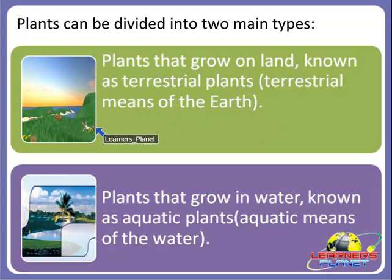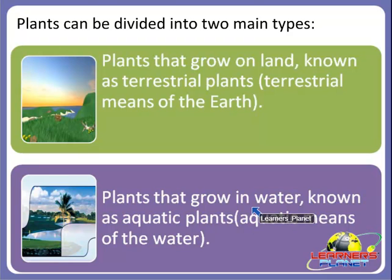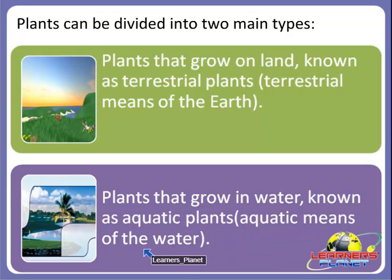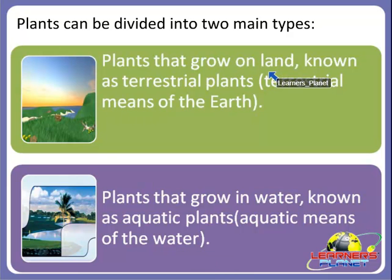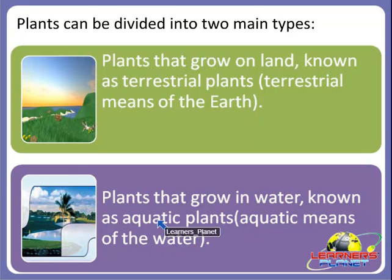You can see in the picture. The second main type is the plants that grow in water, which are known as aquatic plants — aquatic means of the water. So plants are divided mainly into two types: the plants that grow on land are terrestrial plants, and the plants that grow in water are aquatic plants.